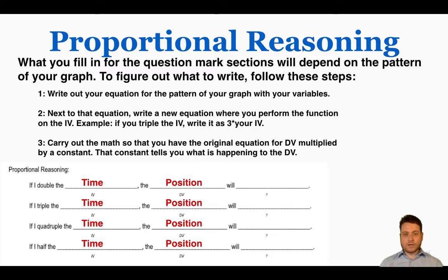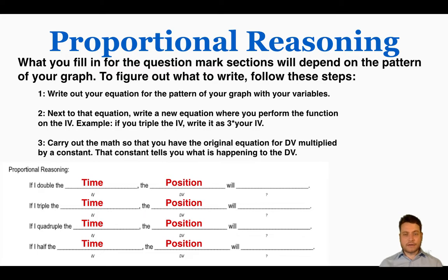Start by writing your equation for the pattern of your graph with your variables. Next to the equation, write a new equation where you perform the function on the IV. As an example, if you triple the IV, write it as three times your IV. Then carry out the math so that you have the original equation for DV multiplied by a constant, and that constant tells you what's happening to the DV. This sounds complicated, but step by step it's actually pretty simple.